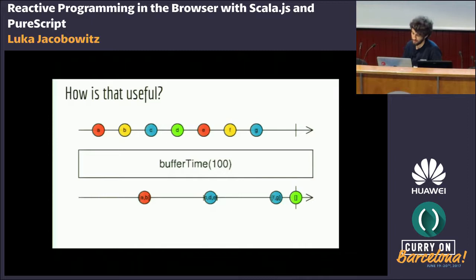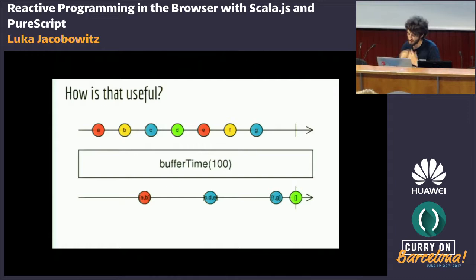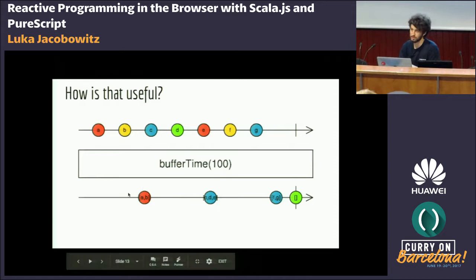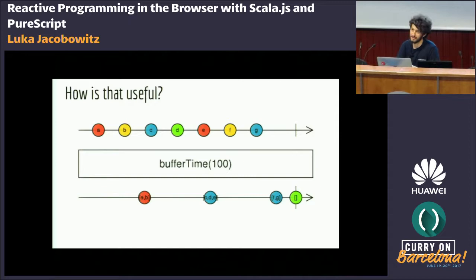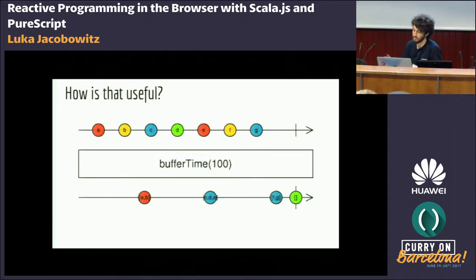Another really cool operator is buffer time, which just buffers values over a specific time window. If we buffer over 100 milliseconds, after a single emission we wait 100ms and add all extra emissions into a buffer. This is really useful if you have a stream of different actions a user might do — instead of sending an HTTP request for each action, we can accumulate the buffered values and send only one HTTP request. We can use this to optimize the pipeline.